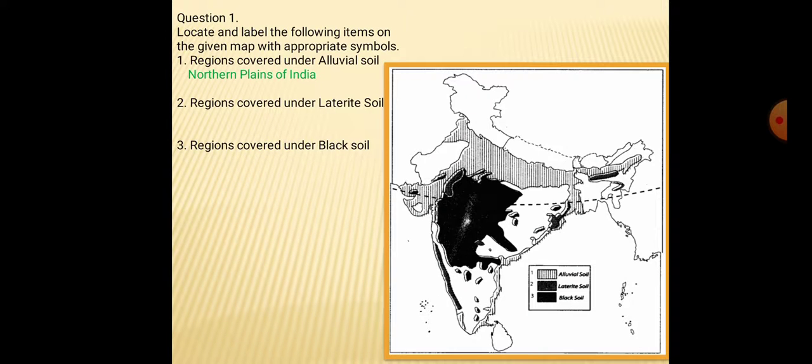We will see it in questions. Question number 1: Locate and label the following items on the given map with appropriate symbols. Regions covered under alluvial soil are the northern plains of India, which are shown with vertical lines. You can identify it easily now.